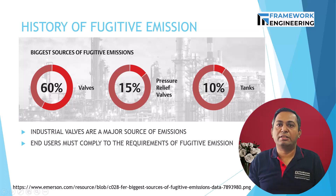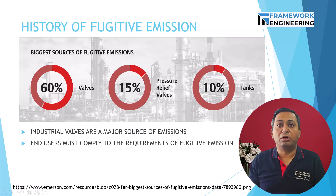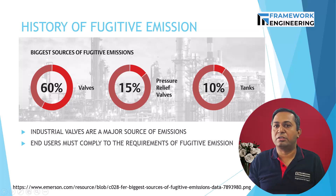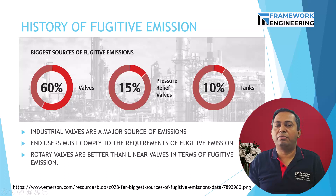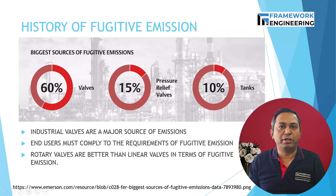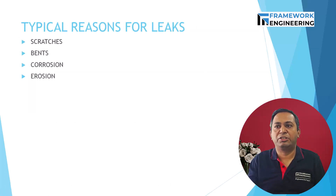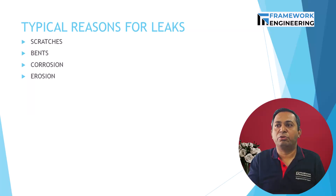Valve sizing is also critical in any system because it determines not only the amount of flow but the volume of flow. If the valve is not sized properly, it may fail to completely close and connect seamlessly with other system components, resulting in leaks. Within valves themselves, the linear globe valve represents around 70 percent of total leaks — linear valves are more prone to emissions compared to rotary valves. The four major typical reasons for leaks are scratches, bends, corrosion, and erosion.